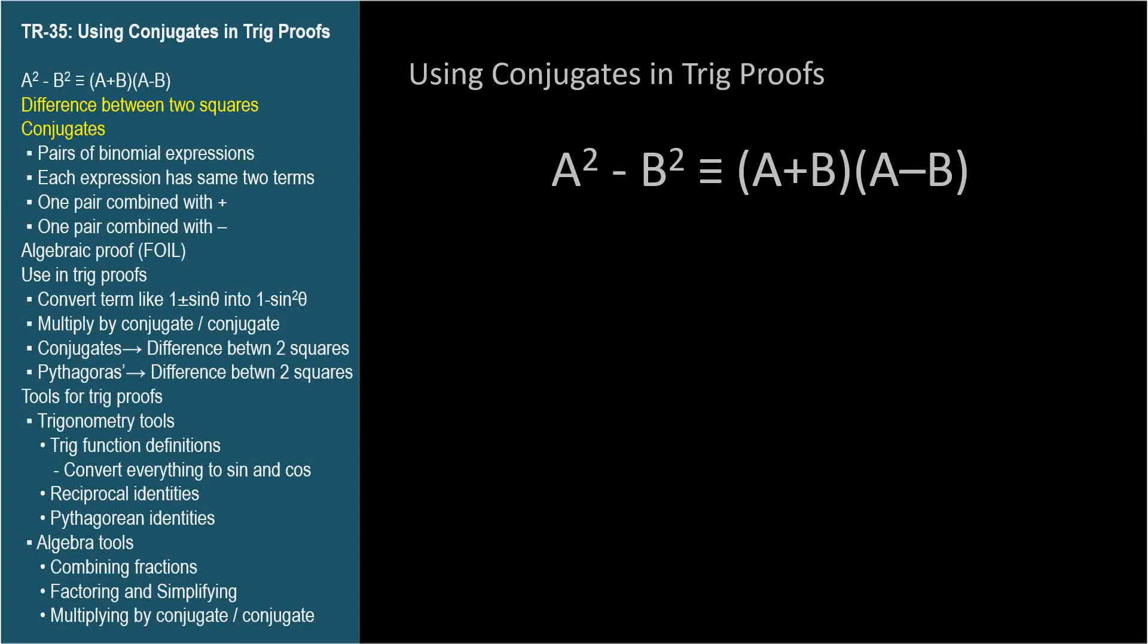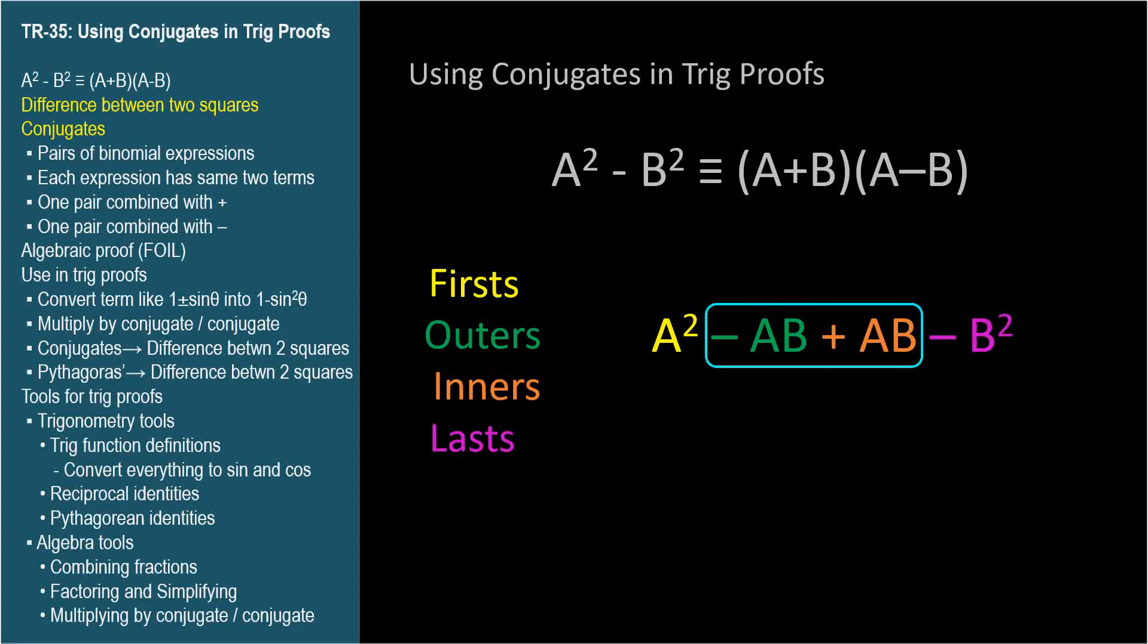Algebraically, multiplying conjugates looks like this. Using the FOIL method for multiplying two binomials, we take the product of the first terms, add the product of the outer terms, add the product of the inner terms, and finally add the product of the last terms. When we multiply conjugates, the outer and inner terms will always be opposites. They negate each other and cancel, leaving the first term squared minus the last term squared.